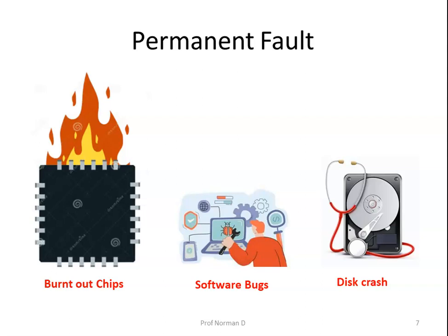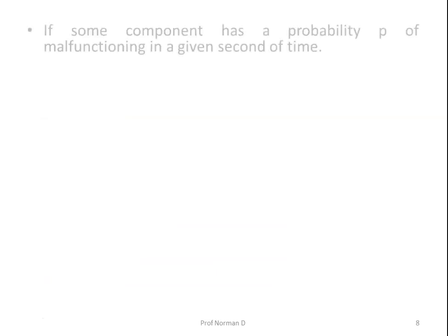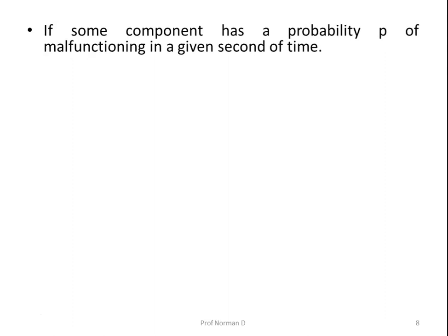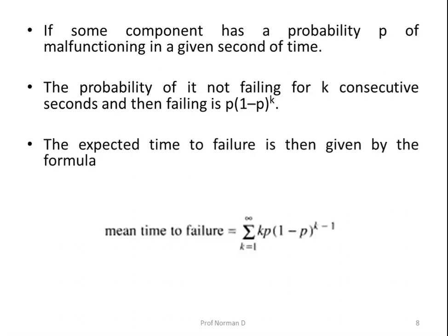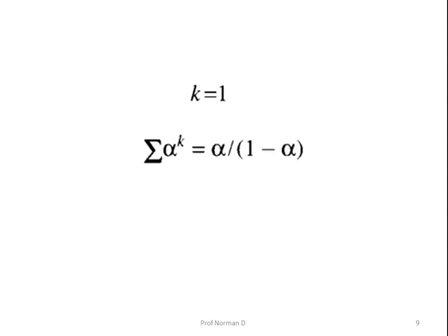If some component has the probability p of malfunctioning in a given second of time, then the probability of it not failing for k consecutive seconds and then failing is p times (1 minus p) to the power k. The expected time to failure is given by the mean time to failure formula. Using the well-known equation for an infinite sum starting with k equals 1: the summation of alpha to the power k equals alpha divided by (1 minus alpha).